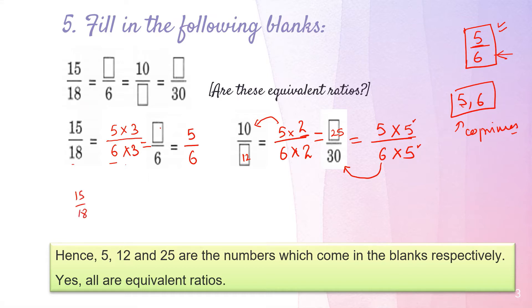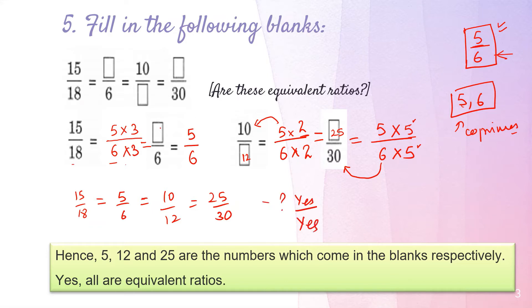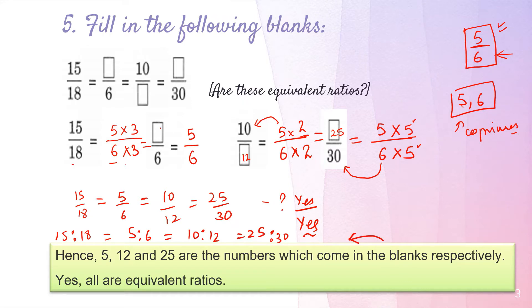Writing the answers neatly: 15 upon 18 equals 5 upon 6 equals 10 upon 12 equals 25 upon 30. These are all equivalent fractions, so they are also equivalent ratios. In ratio form: 15:18 = 5:6 = 10:12 = 25:30. This also shows you how to solve ratio problems presented in ratio form rather than fraction form.